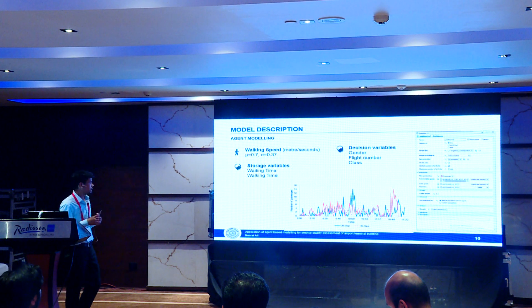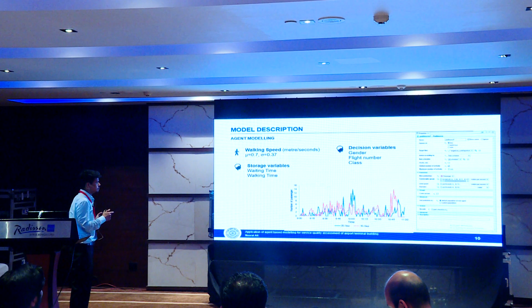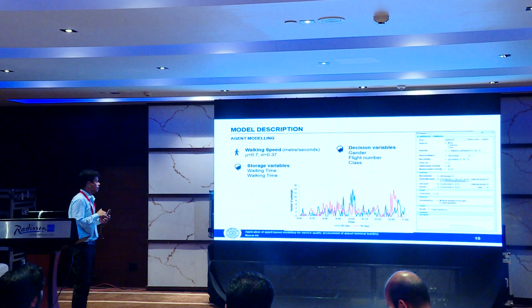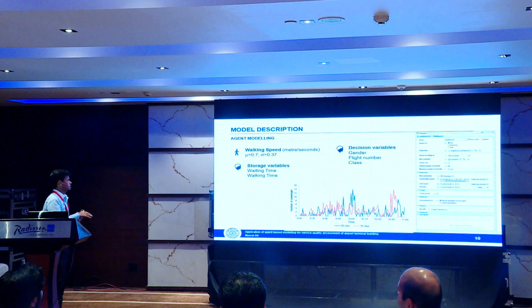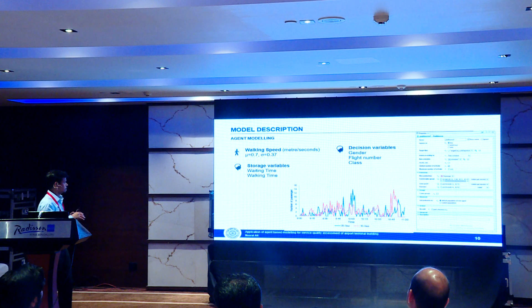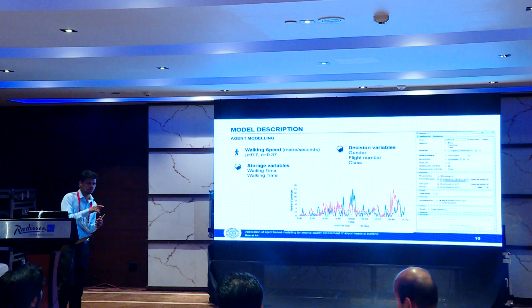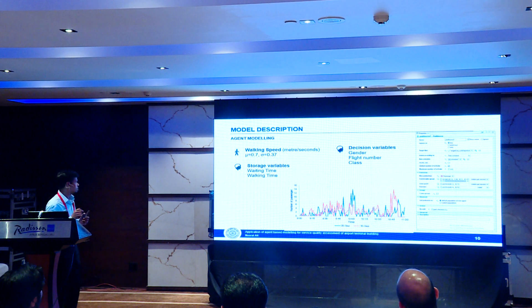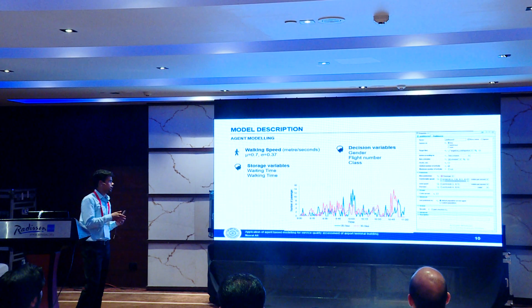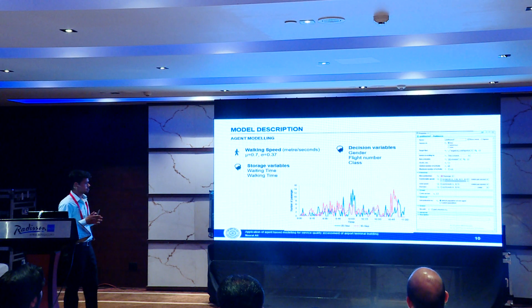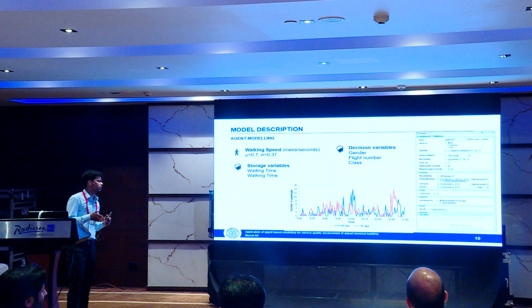Before introducing agents into the model, we install properties in each agent: their walking speed, waiting times for each zone, walking times, and decision variables like flight number and class — whether they belong to business class or economy class.